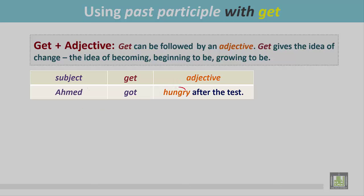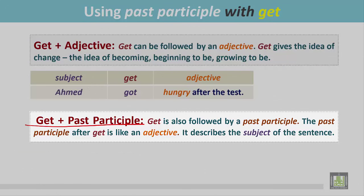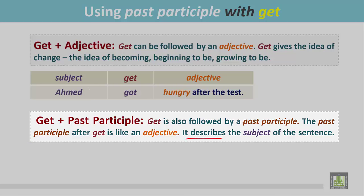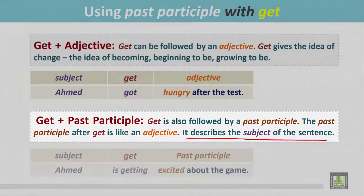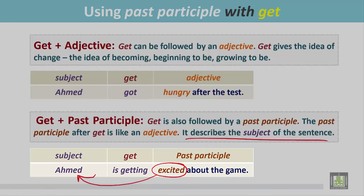This adjective gives information about or describes the subject, and it gives the idea that someone is becoming hungry. Similarly, get is used with a past participle, and the past participle after get is like an adjective — it describes the subject of the sentence. See the example: the subject is Ahmed, the verb is 'getting,' and the past participle is 'excited.' Ahmed is getting excited about the game. This past participle describes the subject and gives more information about it.